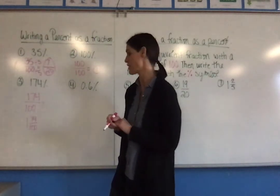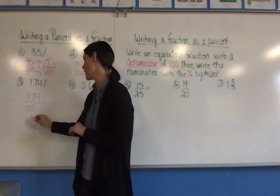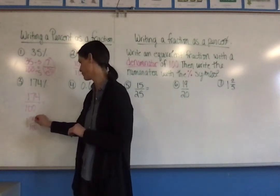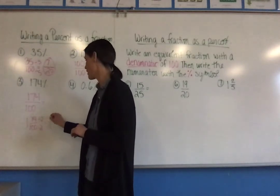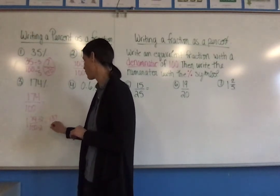74 and 100 is still not simplified, because I can divide each of those by 2. And in simplest form, it's 1 and 37/100.